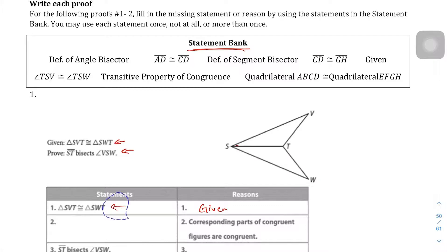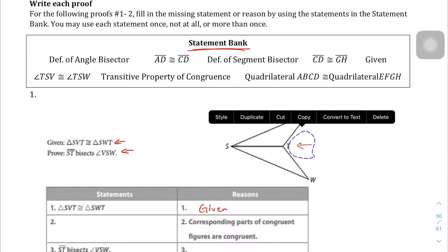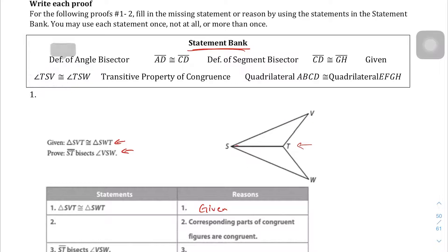This is a rather easy proof. In the second statement here, we're not given the statement, but we are given the reason. We are told corresponding parts of congruent figures are congruent. Well, what are the corresponding parts of this triangle that is corresponding to this triangle? We can see that this angle here, TSV, shares this side and then it's an angle. And then on the other triangle, we have to share this side and then it's an angle. So, what we can say is that TSV and TSW are the corresponding parts of congruent figures. So, which is this one right here. That's what we're going to write here. We're going to write angle TSV is congruent to angle TSW.